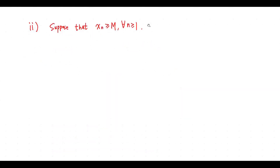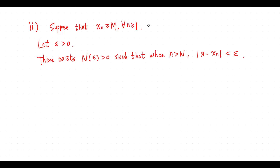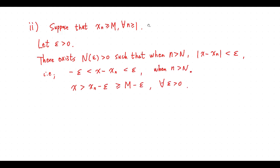Now suppose that x_n is greater than or equal to M for any positive integer n. Let epsilon be greater than 0. There exists big N greater than 0 such that when n is greater than big N, we again have this inequality, which gives us the required inequality. So x is greater than M minus epsilon for any epsilon greater than 0.